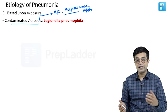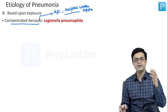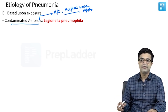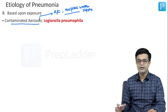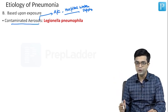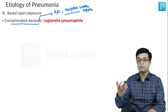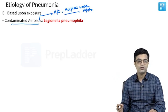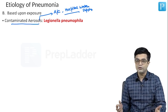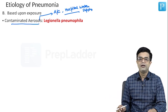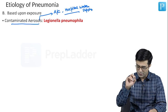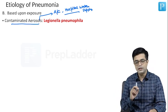A classic undergraduate MCQ: a conference was held with many attendees in a humid environment where ACs were being used; contamination of aerosols caused an outbreak of pneumonia that was not responding to beta-lactams, with neutrophils present but no organisms identified on bronchoalveolar lavage. Everything fits Legionnaires' disease — Legionella pneumophila. You may get a similar question in your superspeciality exam as well, so remember: contaminated aerosols — Legionella pneumophila.